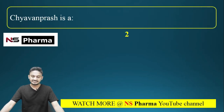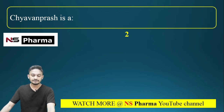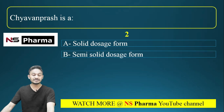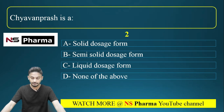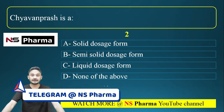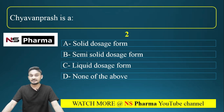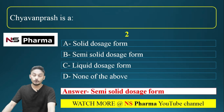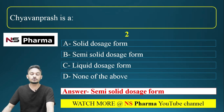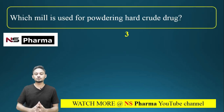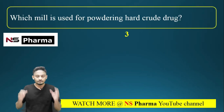Question 2: Chavana Prash is what type of dosage form? Options: (a) solid dosage form, (b) semi-solid dosage form, (c) liquid dosage form, (d) none of the above. Chavana Prash is an Ayurvedic medicine used as a dietary supplement containing honey, sugar, ghee, gooseberry, etc. The correct answer is option B: semi-solid dosage form.